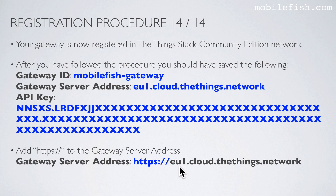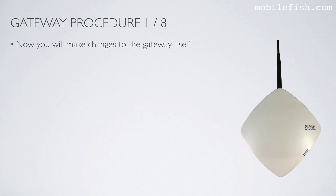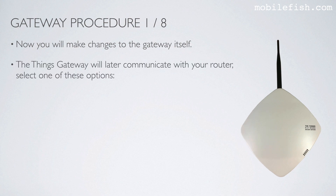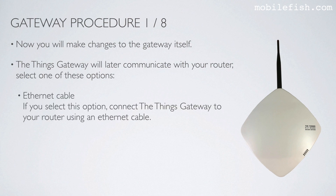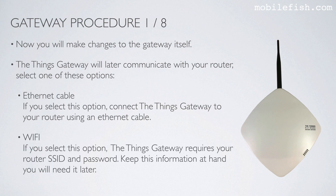Now you will make changes to the gateway itself. The Things Gateway will communicate with your router. Select one of these connection options: Ethernet cable — connect the Things Gateway to your router using an Ethernet cable — or Wi-Fi, in which case the Things Gateway requires your router SSID and password. Keep this information at hand, you will need it later if you select this option.